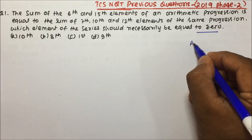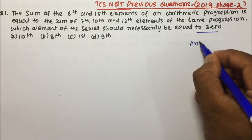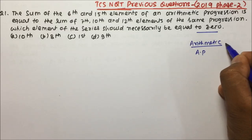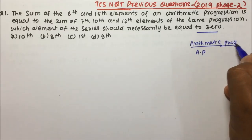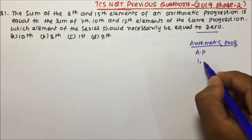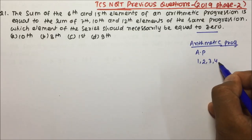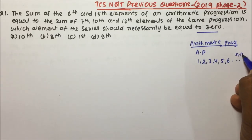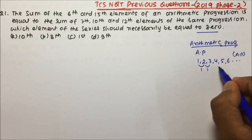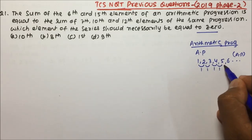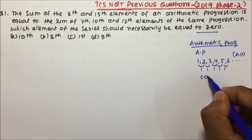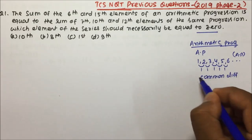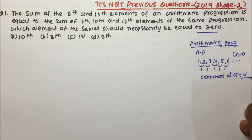You might be knowing about arithmetic progression. If numbers are in an AP — arithmetic progression — then consider the series 1, 2, 3, 4, 5, 6. This is in arithmetic progression because the difference between the numbers is the same, and that is called the common difference, denoted as d.